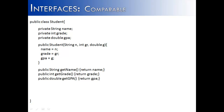One of the more common interfaces used inside of Java is the Comparable interface. I've created a user-defined class called Student. It has name, grade — which stands for grade level — and GPA. The user can set all three of these values when a Student object is instantiated.